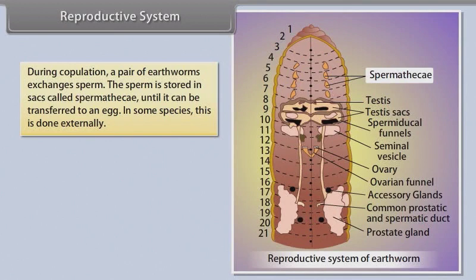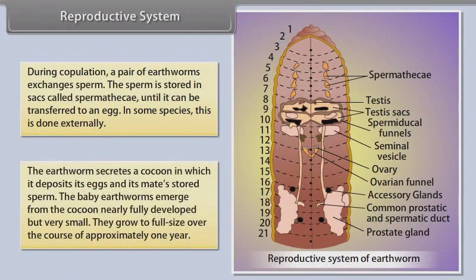During copulation, a pair of earthworms exchanges sperm, which is stored in sacs called spermathecae until transferred to an egg. The earthworm secretes a cocoon in which it deposits its eggs and its mate's stored sperm. Baby earthworms emerge from the cocoon nearly fully developed but very small, growing to full size over approximately one year.